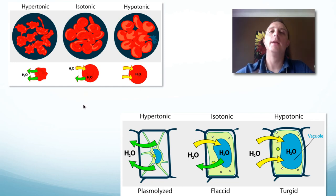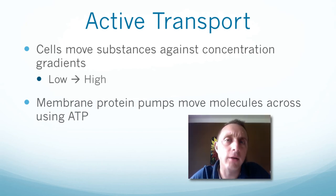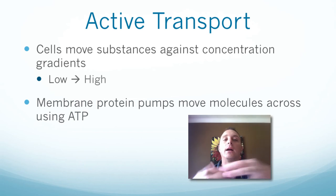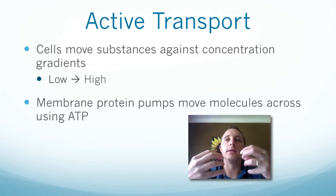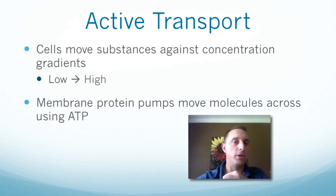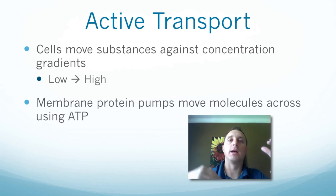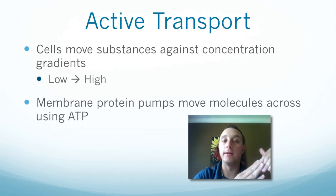Active transport occurs when a cell needs to move something against the concentration gradient — from low concentration to high concentration. This is like pushing things up the hill, which obviously requires energy. That energy comes in the form of ATP.